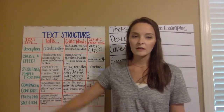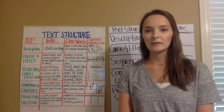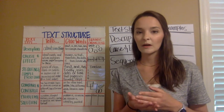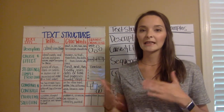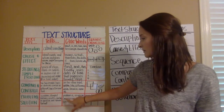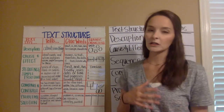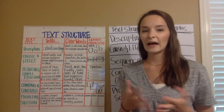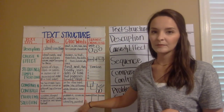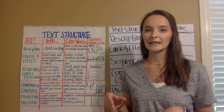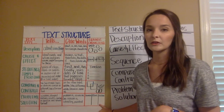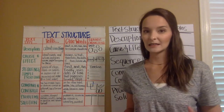The final text structure we're going to review is problem and solution. You're given a problem in the paragraph, and by the end they work it out and figure out the solution — how did they fix that problem? Key words include: the problem is, our issues, it was solved by, or puzzled. The chart has the problem at the beginning, the middle shows all the ways they attempted to fix it, and the third column shows the solution.